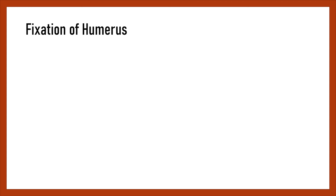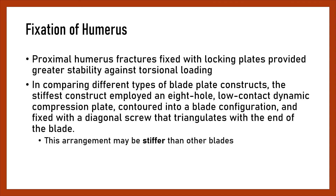Fixation of the humerus: Proximal humerus fractures fixed with locking plates provide greater stability against torsional loading. In comparing different types of blade constructs, the stiffest construct employed an 8-hole low dynamic compression plate contoured into a blade configuration, and fixed with a diagonal screw that triangulates with the end of the blade. This arrangement may be stiffer than other blade configurations.